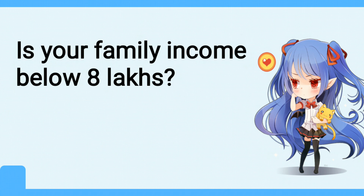Criteria 2: Is your family income below 8 lakhs? Persons who are not covered under the scheme of reservations for SCs, STs, and OBCs, and whose family has a gross annual income below 8 lakhs, are to be identified as the Economically Weaker Section. Income shall include income from all sources — salary, agriculture, business, profession, etc. — for the financial year prior to the year of application.